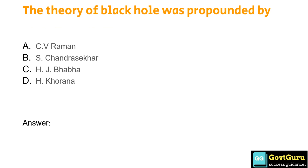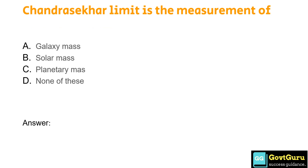The theory of the black hole was propounded by: Option A: C.V. Raman, Option B: S. Chandrashekar, Option C: H.J. Bhaba, Option D: H. Khurana. The answer is Option B, Chandrashekar. The Chandrashekar limit is the measurement of: Option A: galaxy mass, Option B: solar mass, Option C: planetary mass, Option D: none of these. The answer is Option B, solar mass.